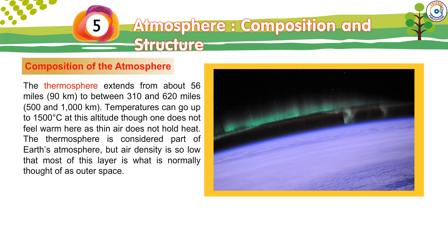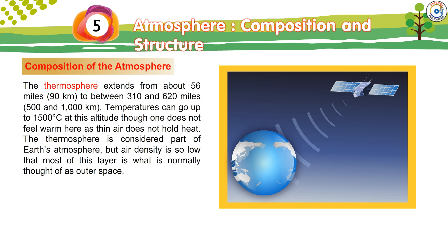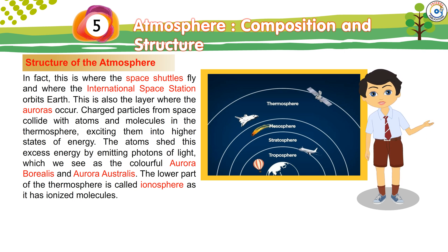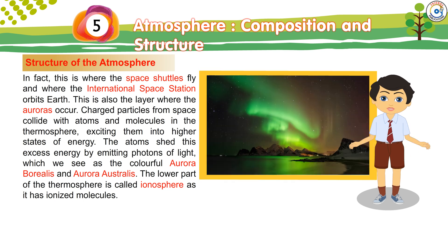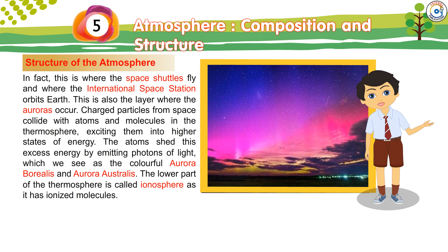The thermosphere extends from about 56 miles (90 kilometers) to between 310 and 620 miles (500–1,000 kilometers). Temperatures can reach up to 1,500 degrees Celsius at this altitude, though one does not feel warm here as thin air does not hold heat. The thermosphere is considered part of Earth's atmosphere, but air density is so low that most of this layer is what is normally thought of as outer space. This is where the space shuttles fly and where the International Space Station orbits Earth. This is also where auroras occur — charged particles from space collide with atoms and molecules in the thermosphere, exciting them into higher energy states. The atoms shed this excess energy by emitting photons of light, which we see as the colorful aurora borealis and aurora australis.